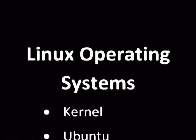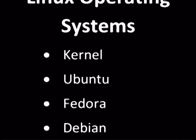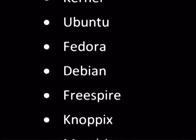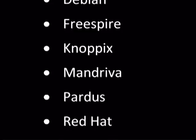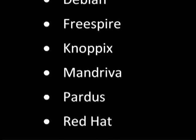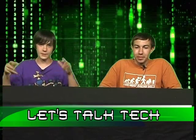Some of the Linux operating systems are: Kernel, Ubuntu, Fedora, Debian, Freespire, Knoppix, Mandriva, Pardus, and Red Hat. That's some of them — there's a lot more. There are thousands. People customized Linux and threw it online for you to download. Those are just some of the well-known ones.